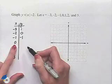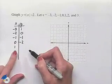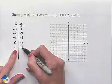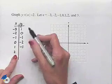The absolute value of 0 is 0, 0 minus 2 is negative 2. The absolute value of 1 is 1, 1 minus 2 is negative 1. Absolute value of 2 is 2, 2 minus 2 is 0.